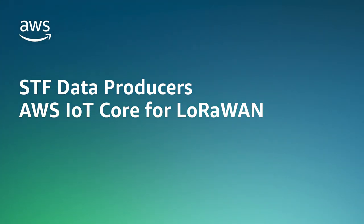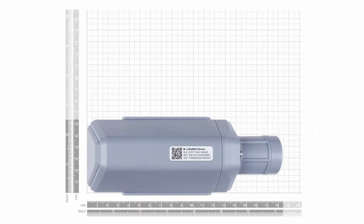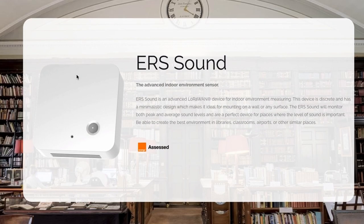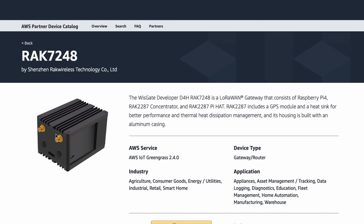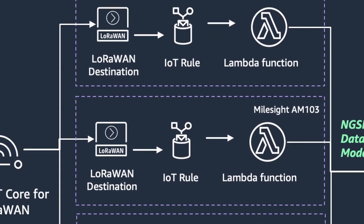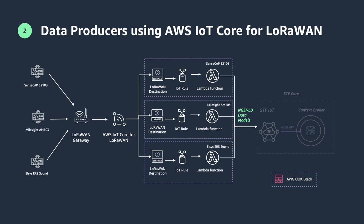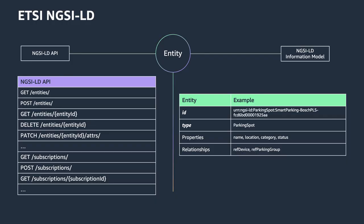In this solution, we use three LoRaWAN indoor environment sensors: the SenseCAP S2103 from SID, which can also be used outdoor; the AM103 from Milesight; and the ERS Sound from Elsys. We use a gateway from Rack Wireless connected to AWS IoT Core for LoRaWAN to ingest data from these sensors. For each type of device, we will have a dedicated data producer, including a Lambda function that transforms the binary payload received from the sensor to a standardized format using the NGSI-LD compliant smart data models.